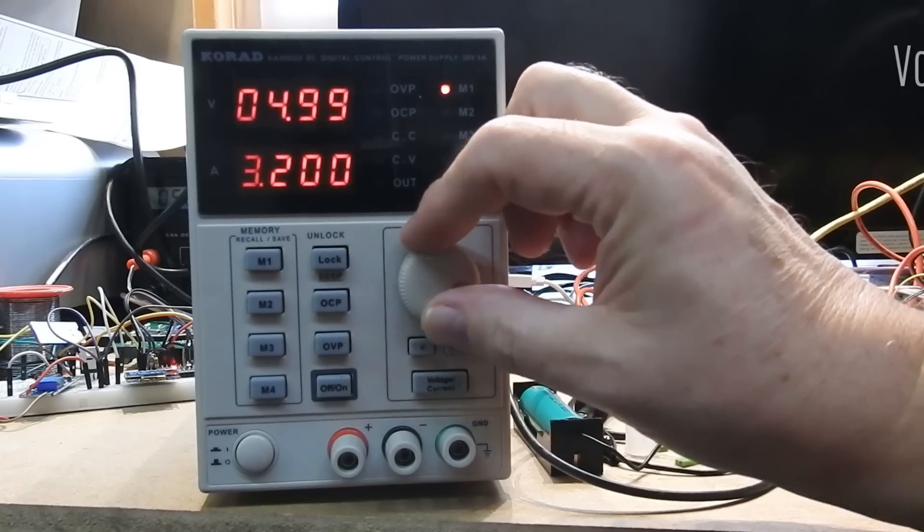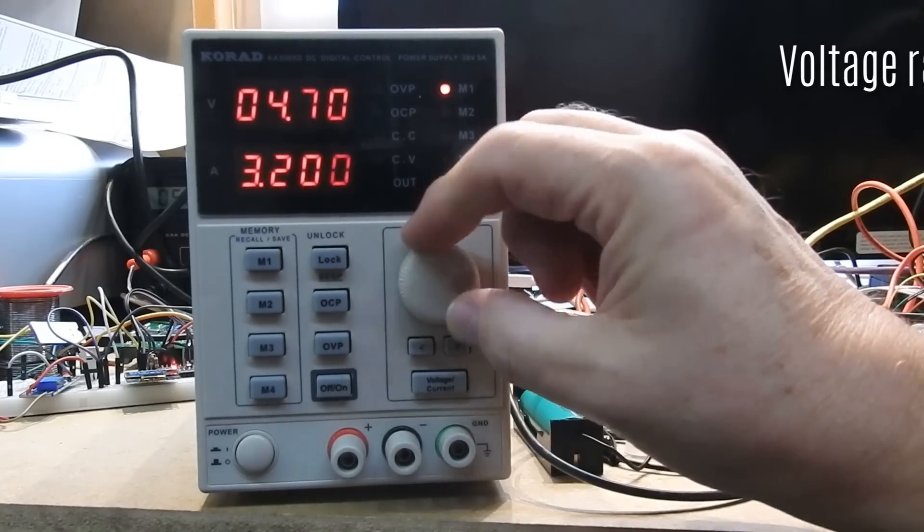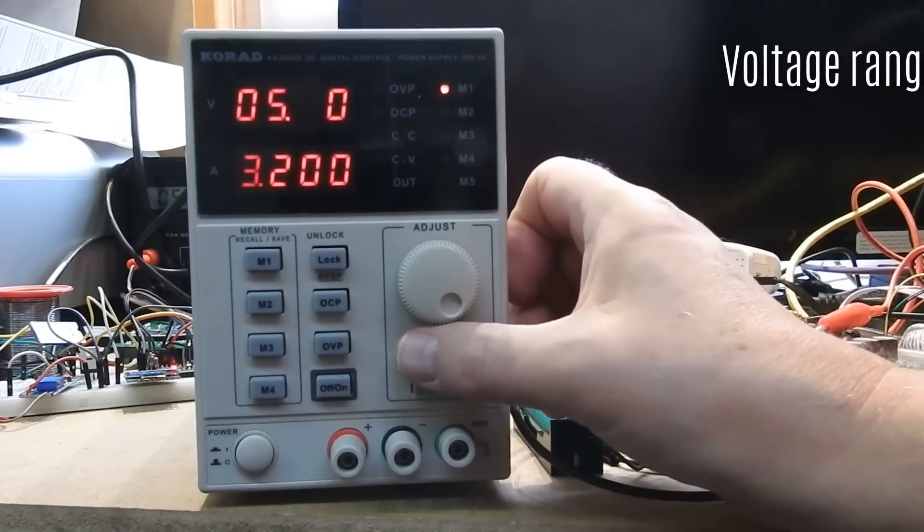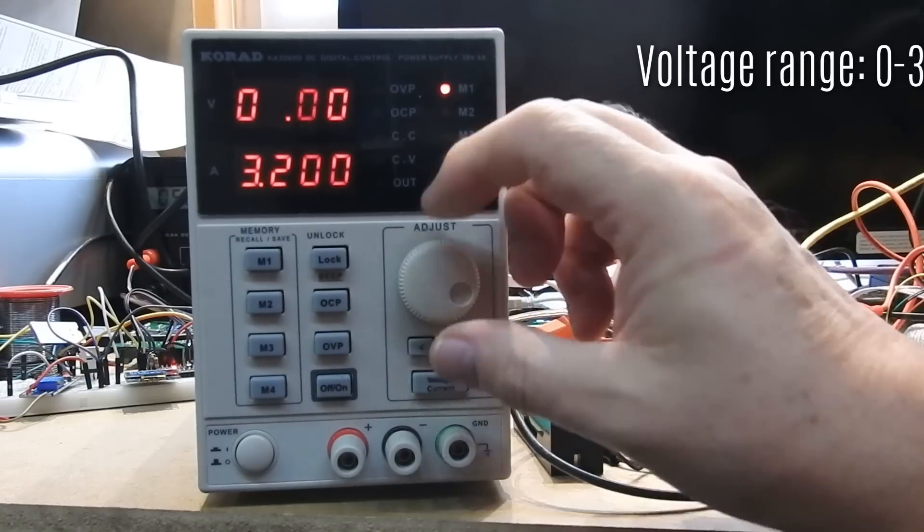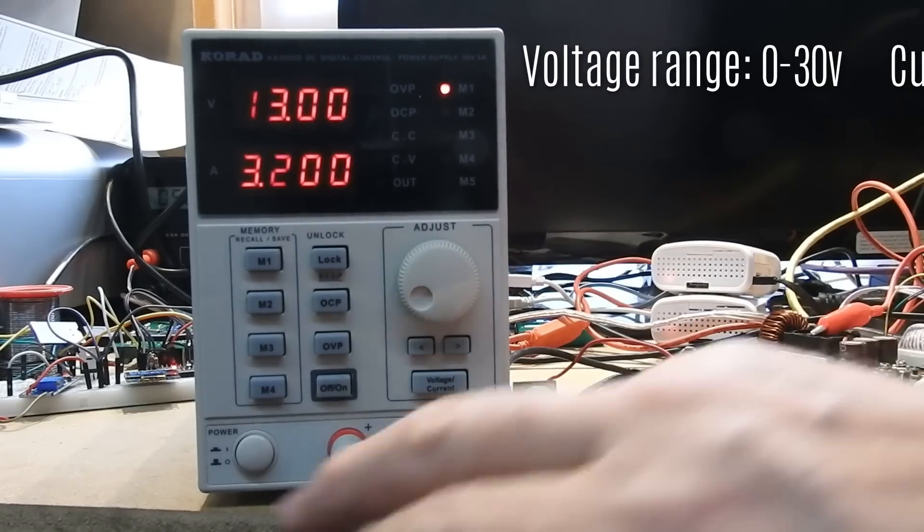They allow you to select between voltage and millivolts for setting. So you can make quite fine adjustments if you want, or coarser adjustments, which is absolutely ideal. So that entire section there we've now covered up to 30 volts and 5 amps.